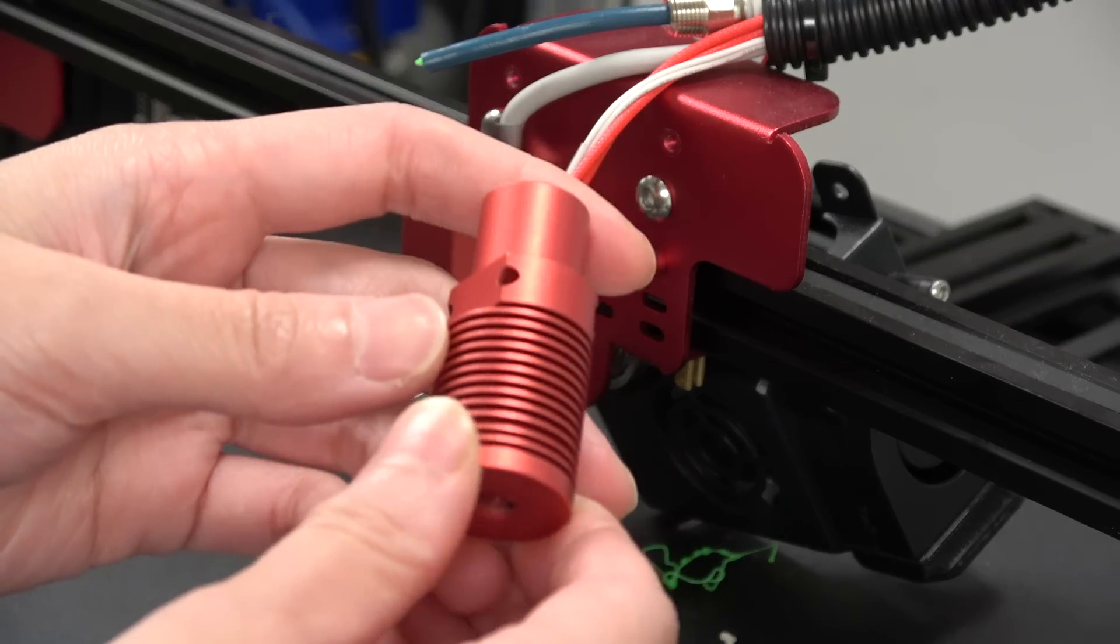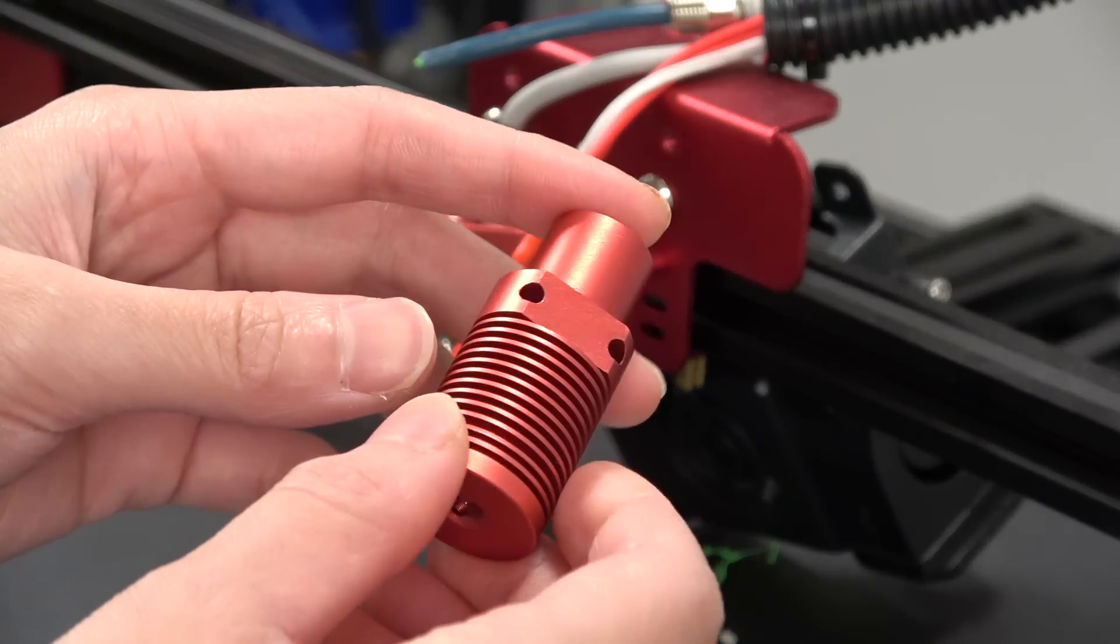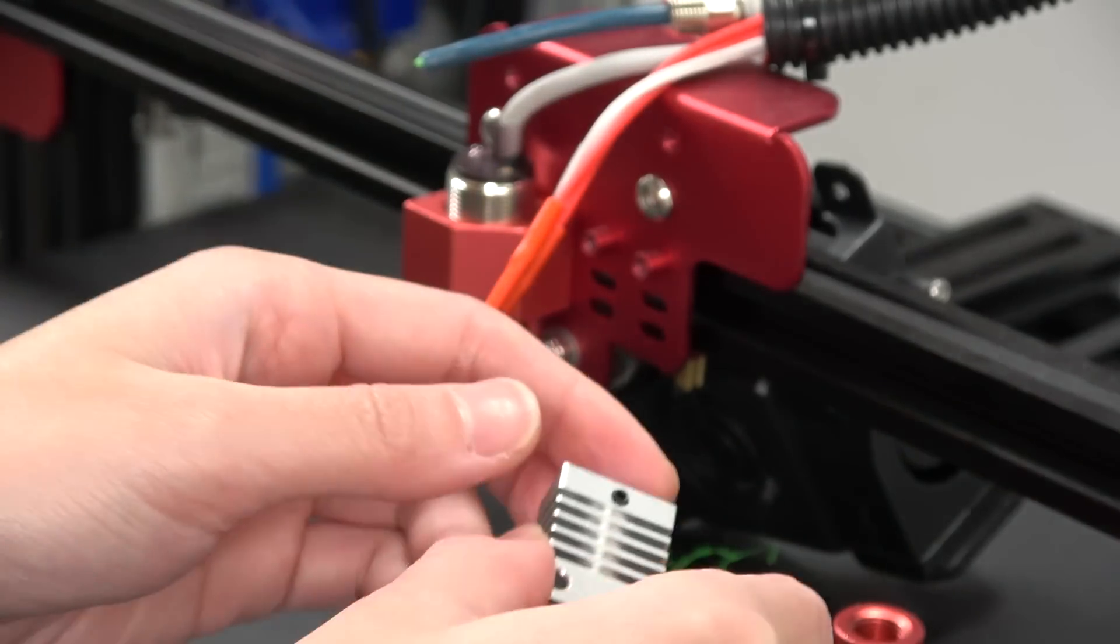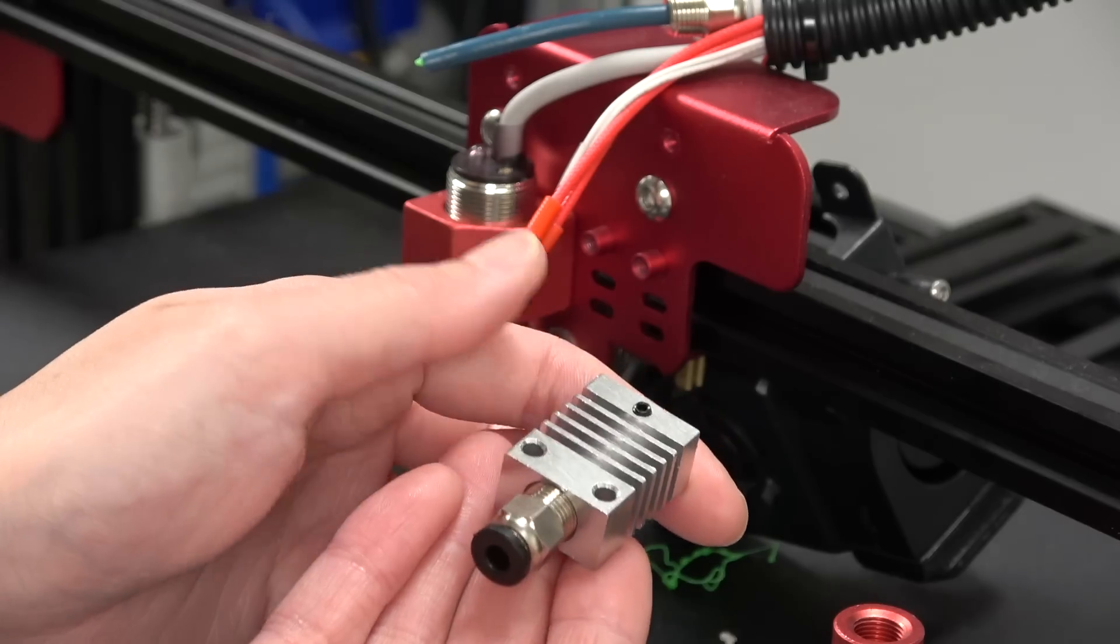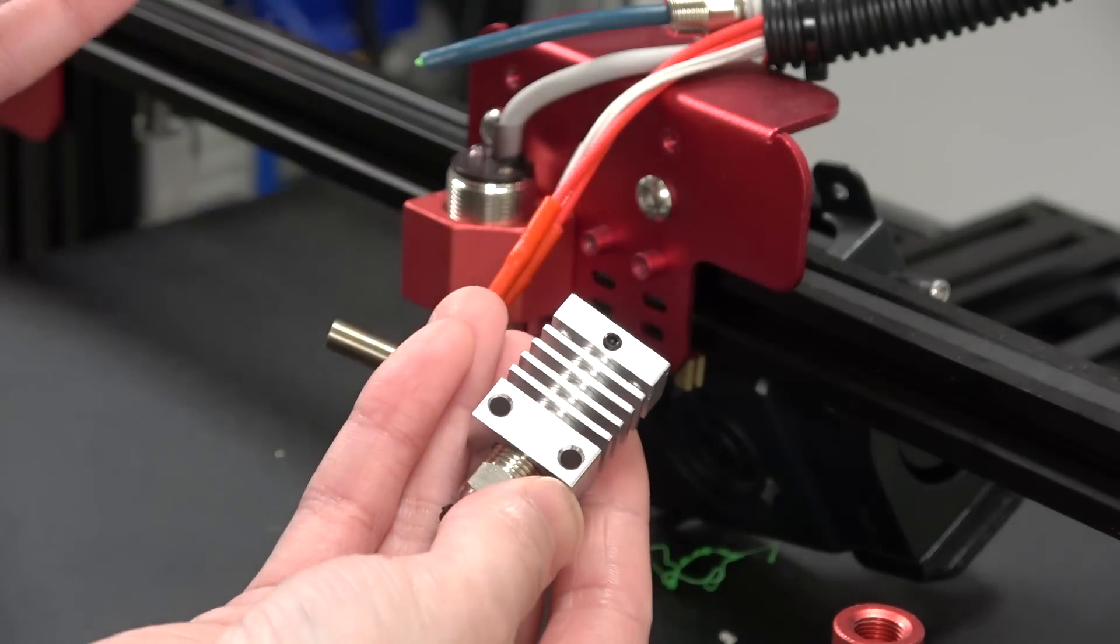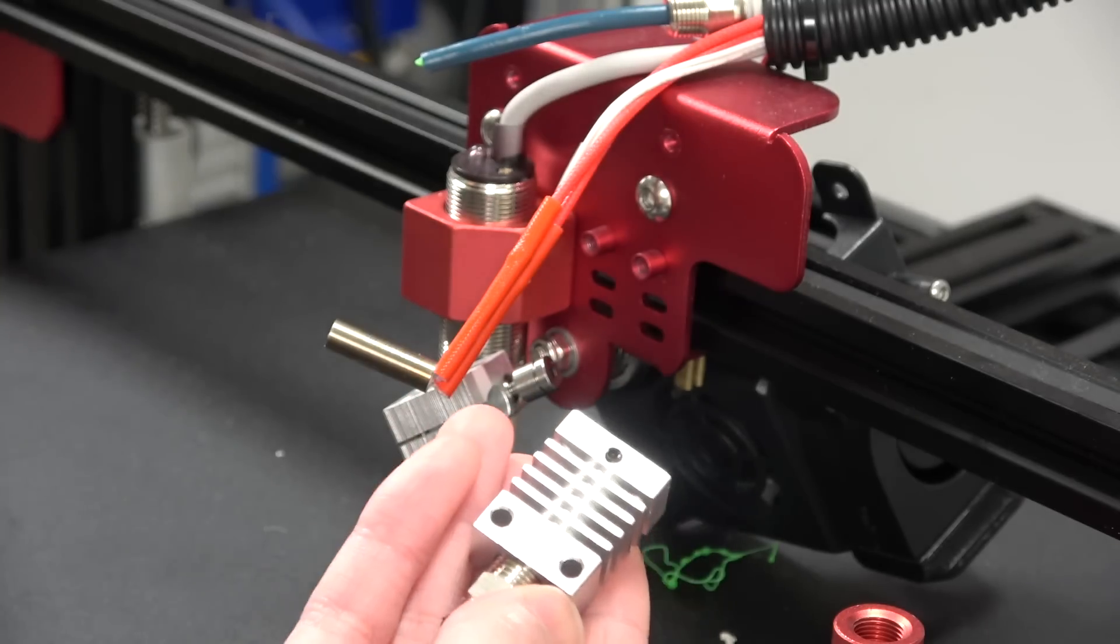So I tried to use the original heat sink from Creality but it doesn't work. I have this one instead so I'm going to use this one. If this one doesn't work out because I'm in Shenzhen so it's easy for me to order another one from Taobao.